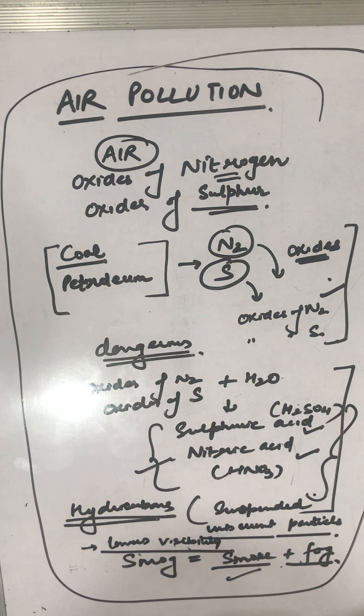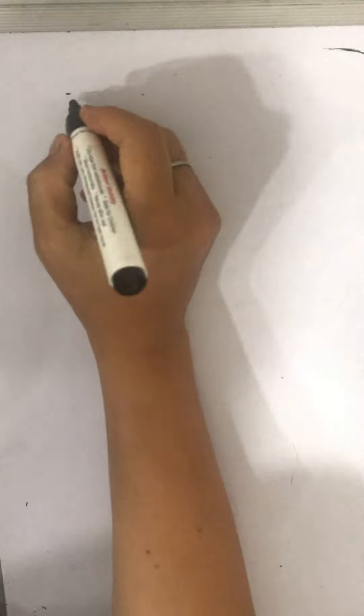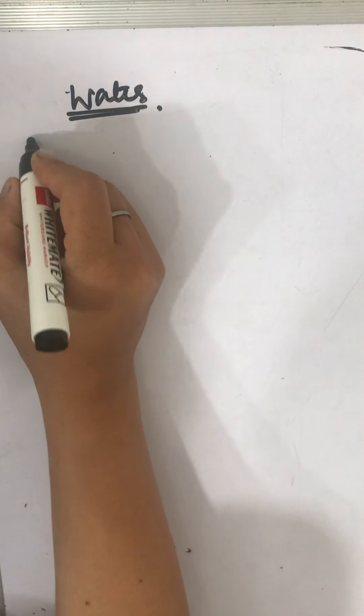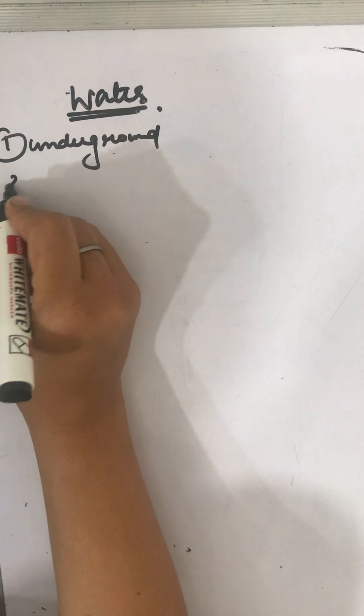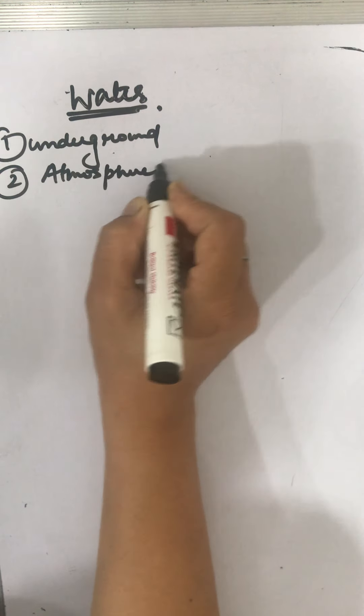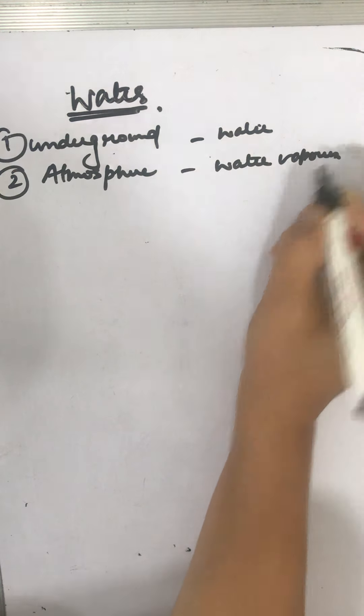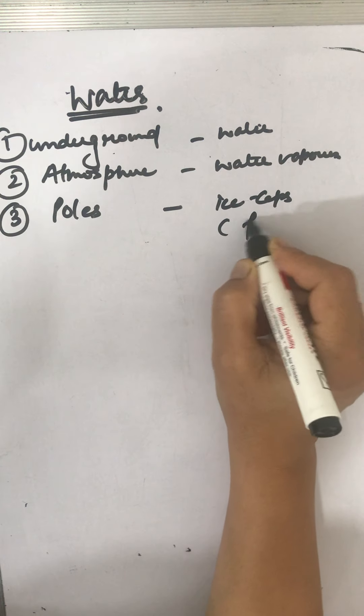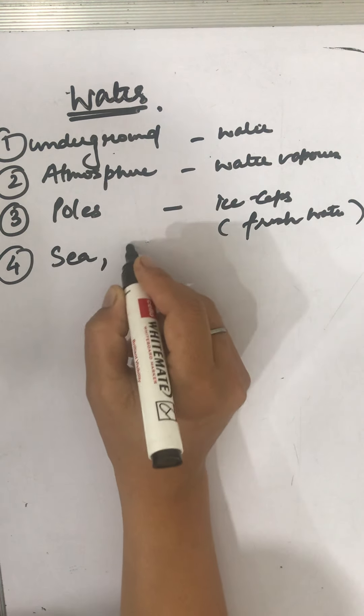Now moving to water. Water, when we talk about it, is a wonderful liquid because it has the capacity to dissolve everything. Its availability is also wonderful. Some of it is found underground, one source is underground. It is also in the form of water vapors in the atmosphere. Fresh water is also found frozen in the ice caps at the polar areas.